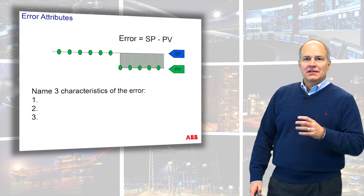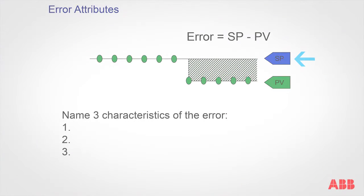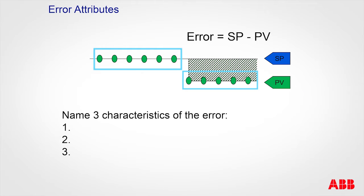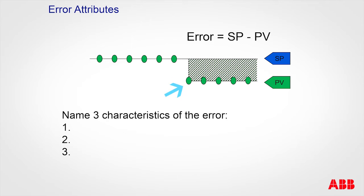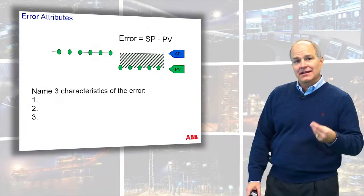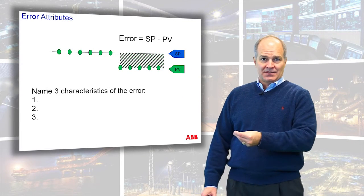When we look at this, we have a trend showing the set point or the reference, and this is the process variable — the measurement. Those circles represent the execution. In today's digital world it's not analog where you have a continuous stream of data; you have samples. So we have these sample points. Something was really good here and then all of a sudden something happened, and so what we have is an error. The error is defined as the set point minus the process variable.